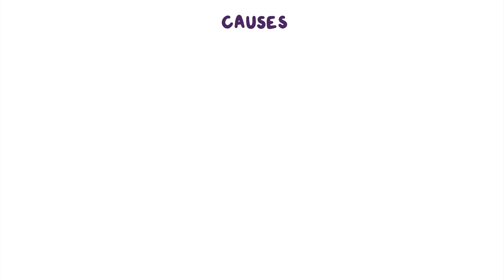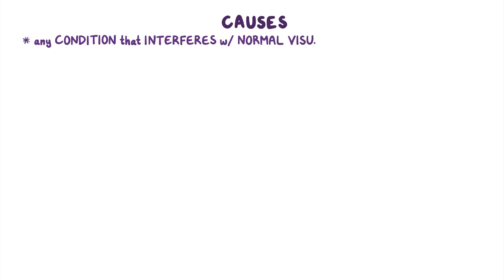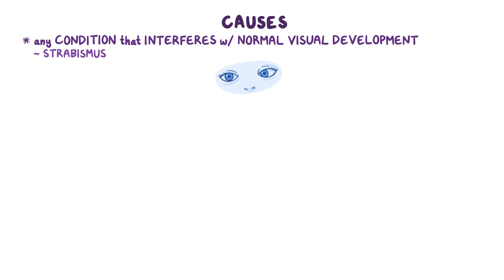The causes of amblyopia include any condition that interferes with normal visual development, such as strabismus or an abnormal alignment of the eyes, and astigmatism, which is when light doesn't focus properly on the retina causing blurry vision.